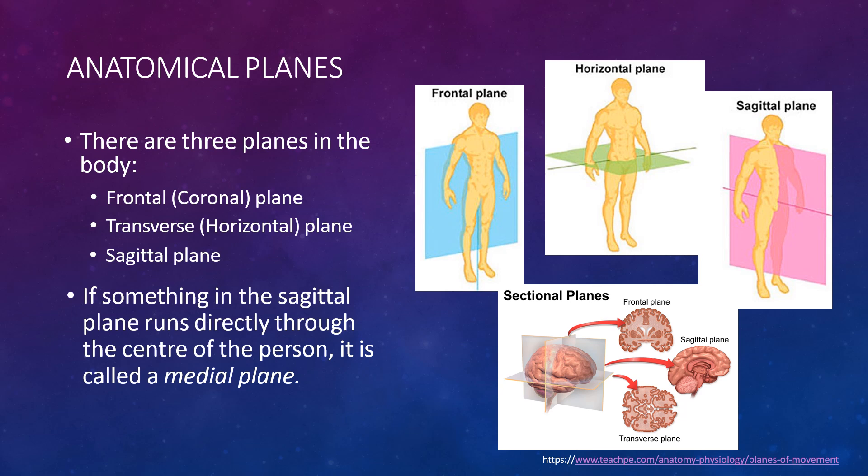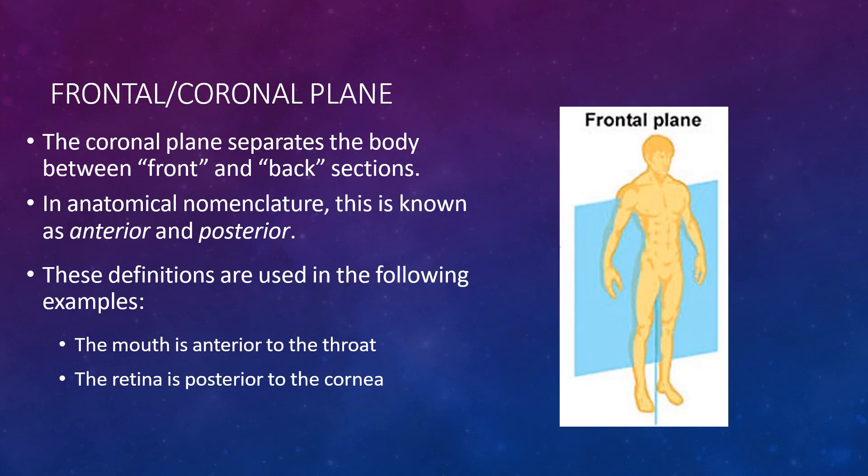There are three planes in the body: the frontal coronal plane, the transverse horizontal plane, and the sagittal plane. The coronal plane separates the body between the front and back sections. In anatomical nomenclature, this is known as anterior and posterior. For example, the mouth is anterior to the throat, and the retina is posterior to the cornea.